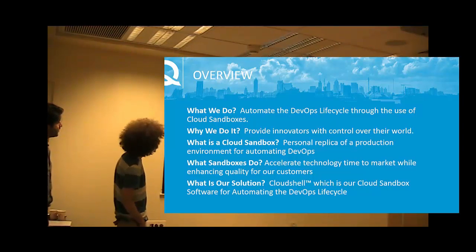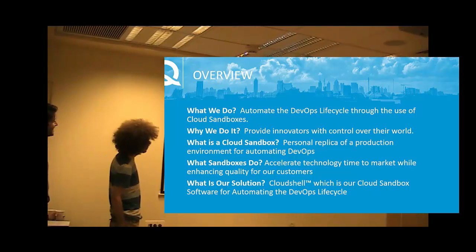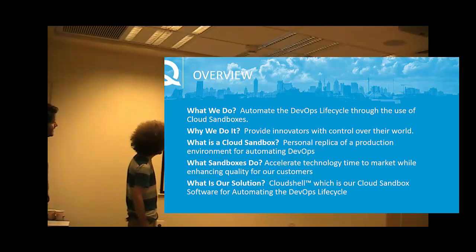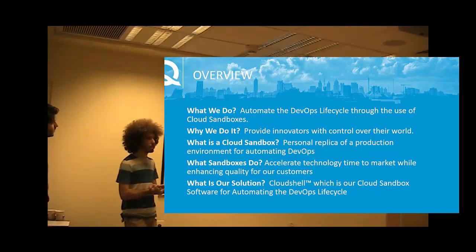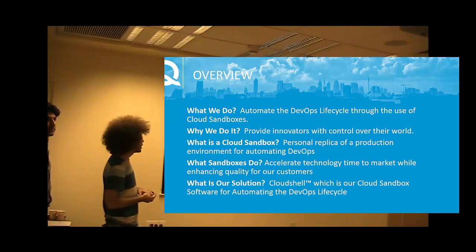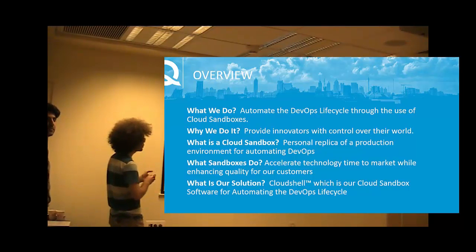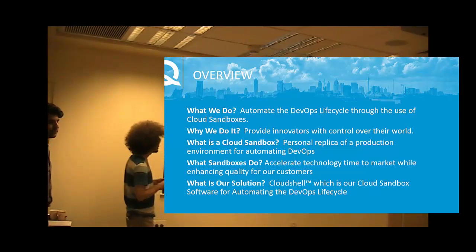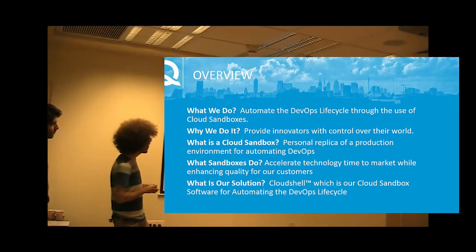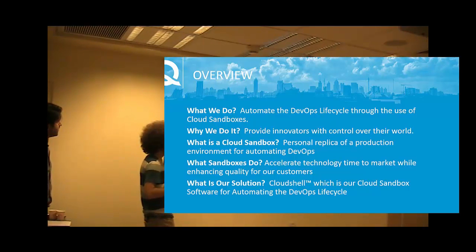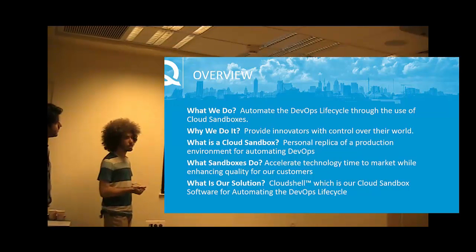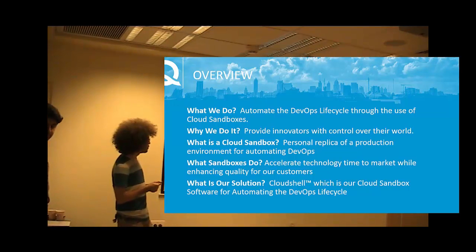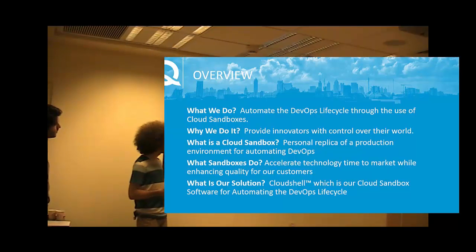This slide has a bit of fancy words, so let's try to extract what's important. Quali — what we do is automating DevOps. And the most important entity for us in DevOps is sandbox, and specifically cloud sandbox. Most of us are developers, and our day-to-day is mostly DevOps and mostly sandboxes.